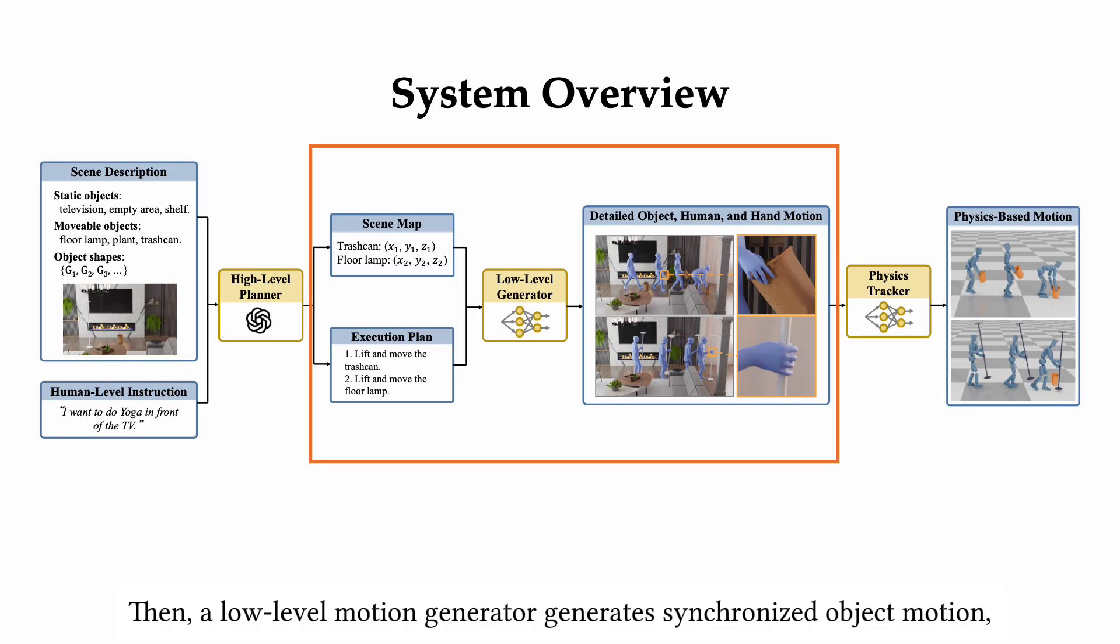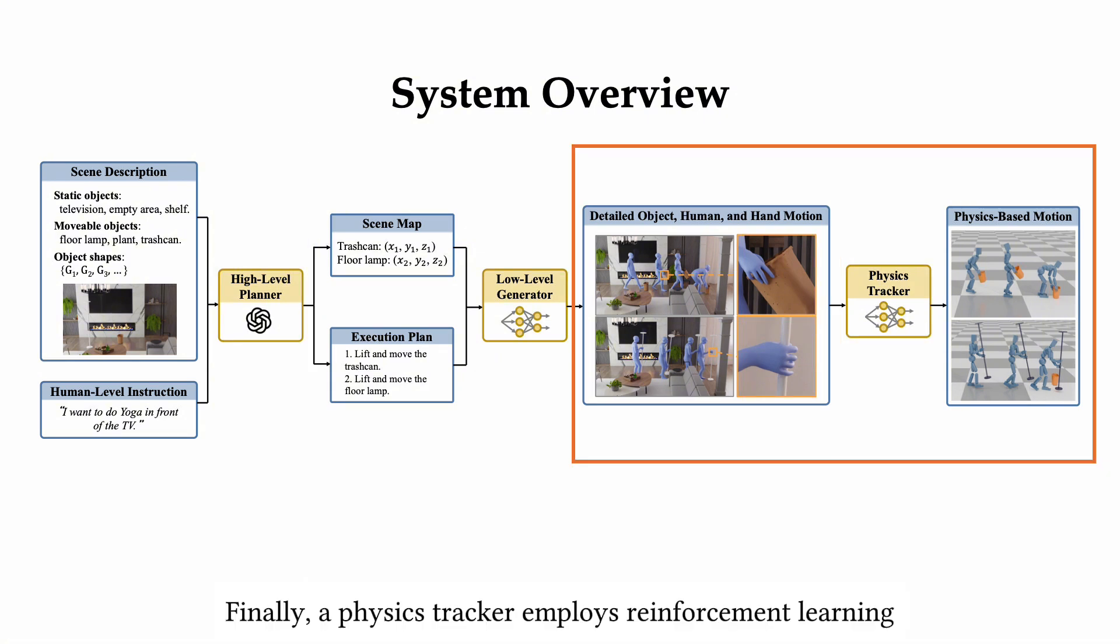Then, a low-level motion generator generates synchronized object motion, full-body human motion, and finger motion. Finally, a physics tracker employs reinforcement learning to imitate the motion, ensuring it remains physically plausible.